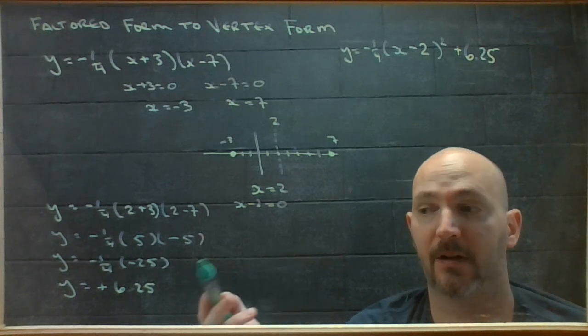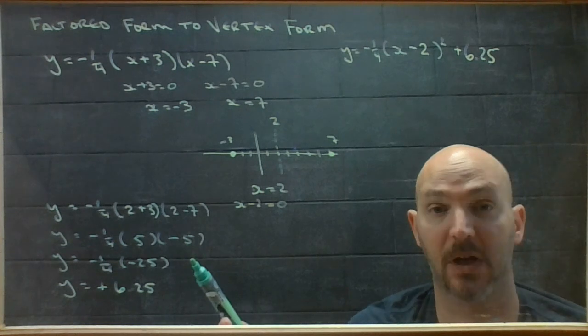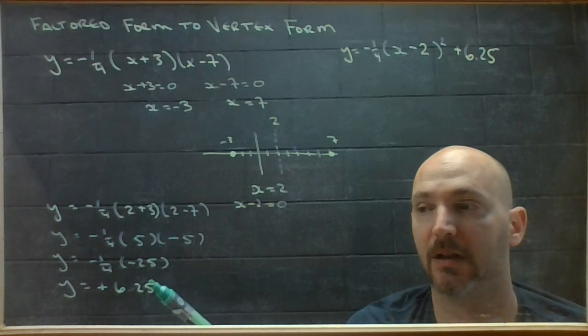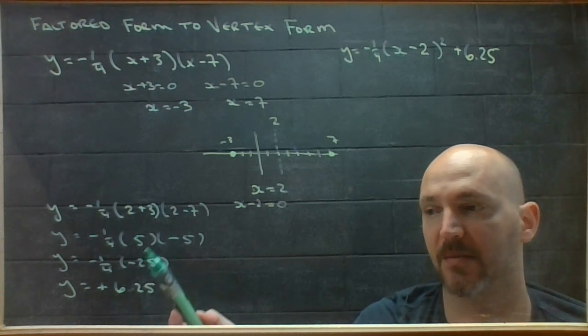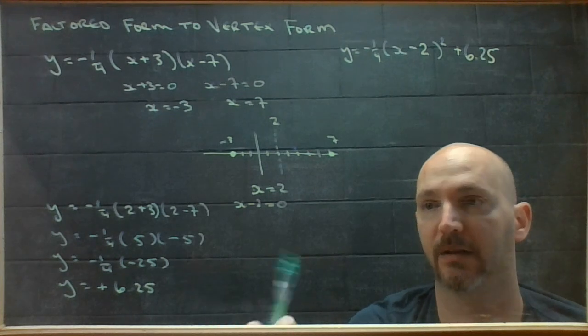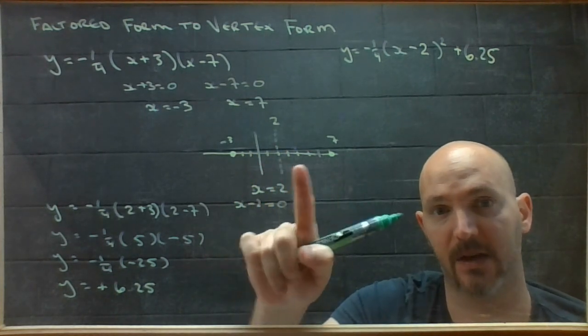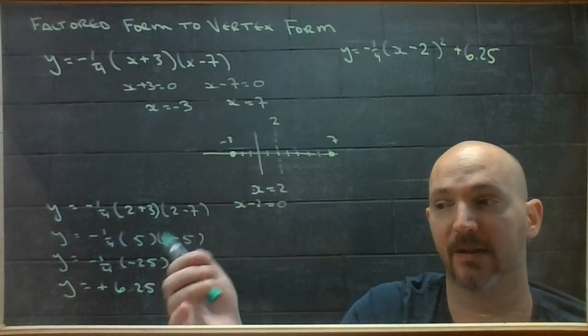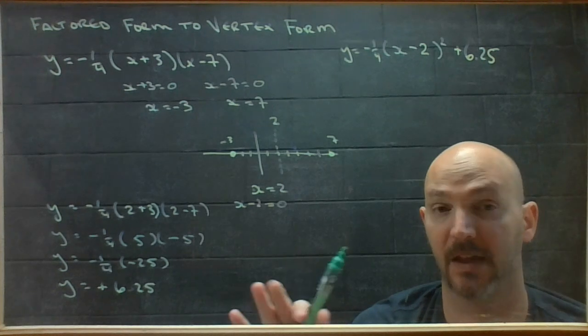Now, a couple things to notice. First off, this didn't come out as a whole number. It's okay. It doesn't have to. The transformation factor and where these x intercepts are happen to put the vertex not on the grid. It is horizontally. It lands right at 2 this way. But the y value is somewhere in between 6 and 7. And that's okay.